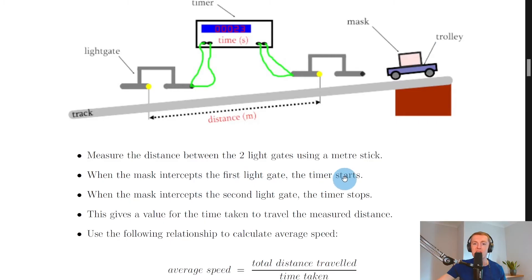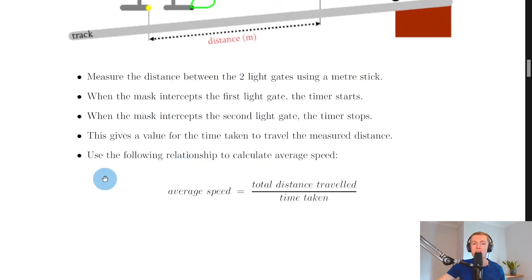When the mask, the card, intercepts the first light gate, the timer starts. So when the card intercepts this first light gate, it's going to cut the light beam and that's going to start the timer. When the mask intercepts the second light gate over here, the timer stops. When this card cuts the second light gate, the timer will stop.